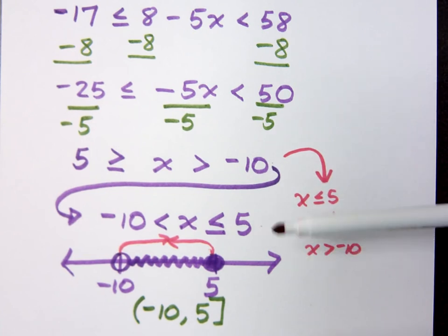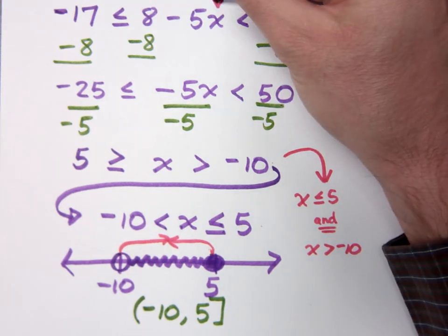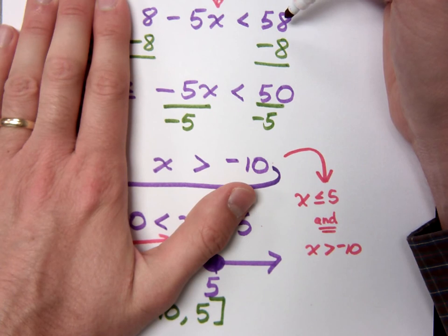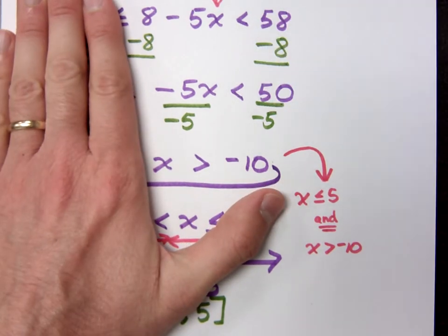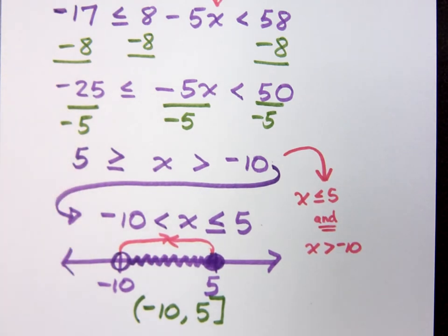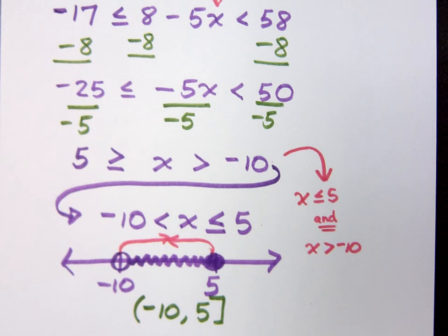And the reason why you started by subtracting 8 on all ends is because you don't want to get negative 5x by itself. I'm trying to isolate the x up here. And so if I have just this inequality here, 8 minus 5x less than 58, I would subtract 8 on both sides. Then I would divide both sides by negative 5. So the steps that I would take to solve that inequality, I'm going to use over here as well. What you do to one part, you're going to do to all three parts of this inequality. I started with subtracting 8 minus 5 to get 3x. I was like, wrong, you can't do it because they're not like terms. Right, don't subtract 8 from every term. You subtract it from each side or each part of the inequality. Okay.